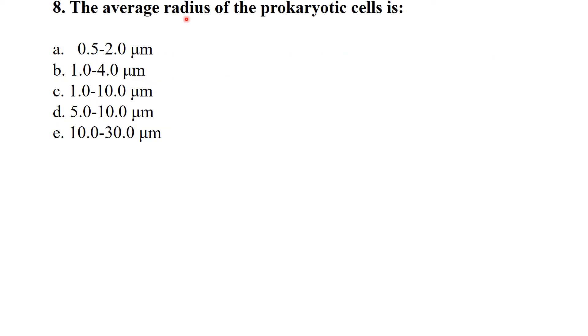The average radius of a prokaryotic cell is one to four micrometers.